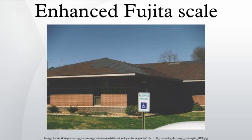The six categories for the EF scale are listed in order of increasing intensity. Although the wind speeds and photographic damage examples are updated, the damage descriptions given are those from the Fujita scale, which are more or less still accurate. However, for the actual EF scale in practice, damage indicators are predominantly used in determining tornado intensity. The EF scale currently has 28 damage indicators, or types of structures and vegetation, each with a varying number of degrees of damage. Large degrees of damage done to the damage indicators correspond to higher wind speeds.